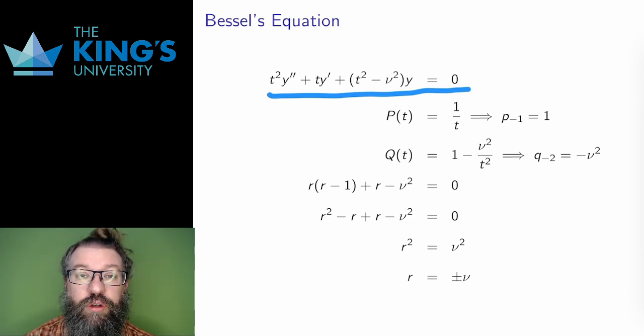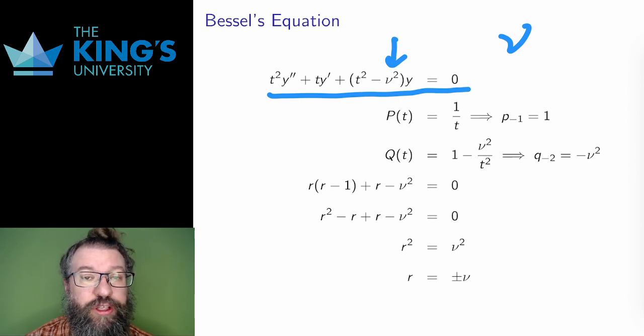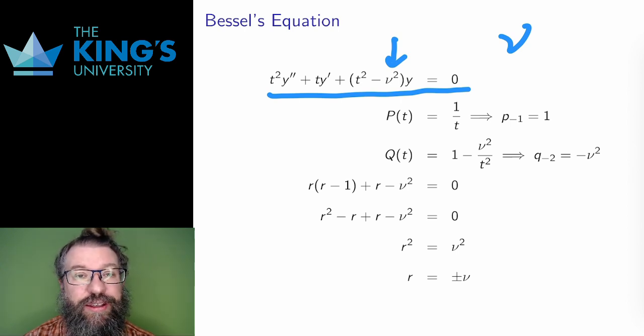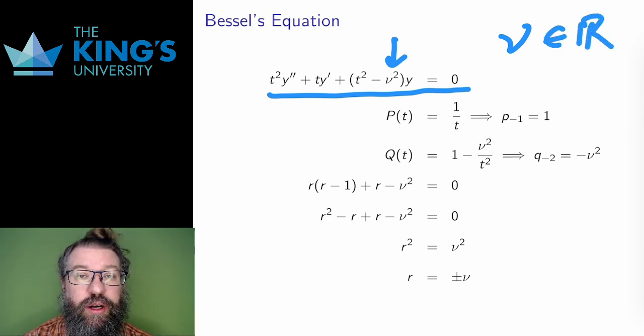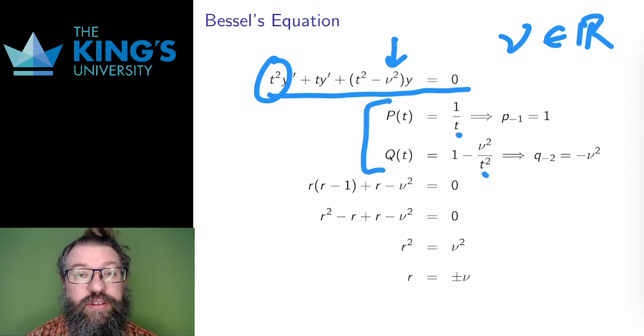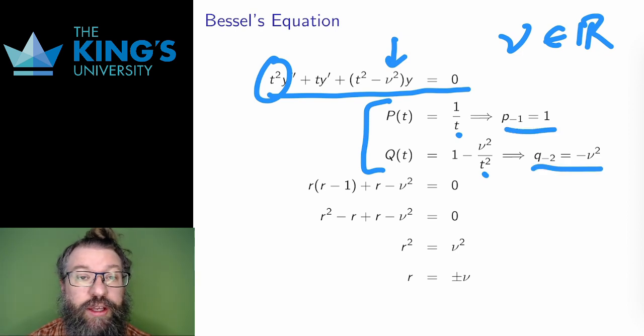There is a parameter in this equation, which is conventionally written with the Greek letter nu. Unfortunately, nu looks a lot like the Roman letter v, but this is not v, this is nu. Sorry, as always, for the confusing notation. The parameter nu can be any real number. If I divide through by t squared, I get the standard form, and from that, p is 1 over t, and q is 1 minus nu squared over t squared. This means that p minus 1 is 1, and q minus 2 is negative nu squared. And I can put these in the indicial equation, which simplifies nicely down to r squared equals nu squared, so the roots are plus and minus nu.